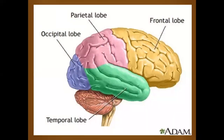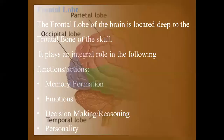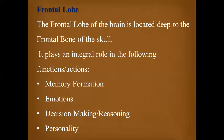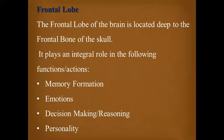This is the yellow frontal lobe. The frontal lobe is located at the frontal point of the skull. Its name comes from its position relative to the frontal bone of the skull — it plays an integral role in several key functions.